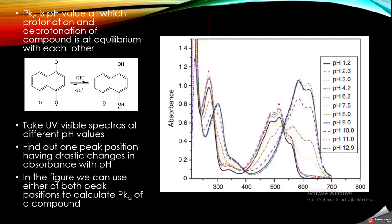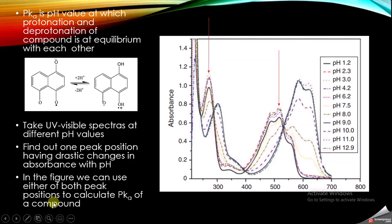pKa is the pH value at which the protonation and deprotonation of a compound is at equilibrium with each other. For example, as you can see in this figure, the addition of two protons to form this compound is in equilibrium with the formation of this compound by the removal of two protons. This occurs at a specific pH for every compound, and we can find out that pH value using electronic absorption spectroscopy.